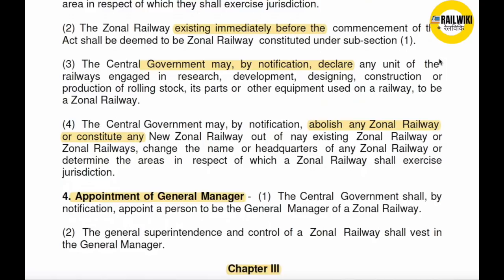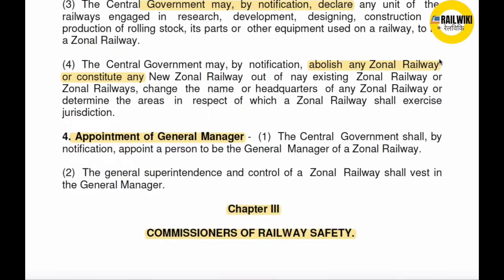The central government may by notification declare any unit engaged in research, development, designing, construction, or production of rolling stock or parts and other equipment as a railway unit. The central government may also by notification constitute a new general railway out of existing general railways — declaring the new zone, its name, headquarters, area of jurisdiction, and powers. Central government को यह power है।